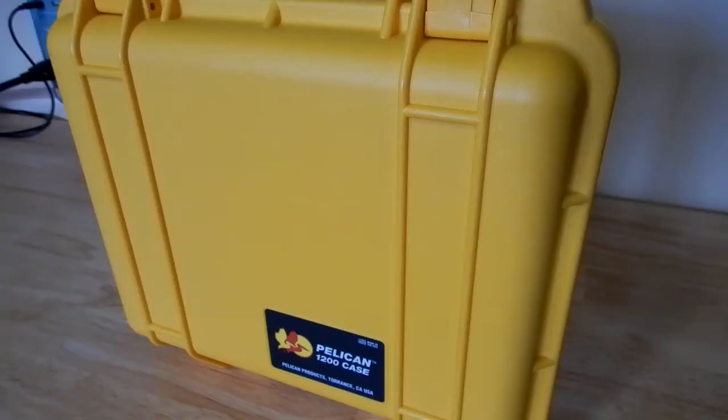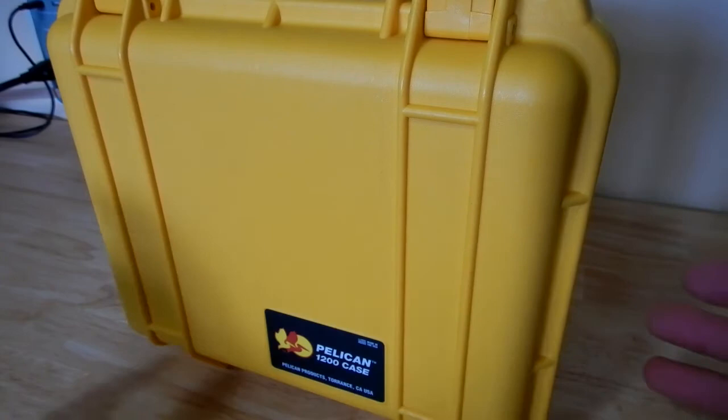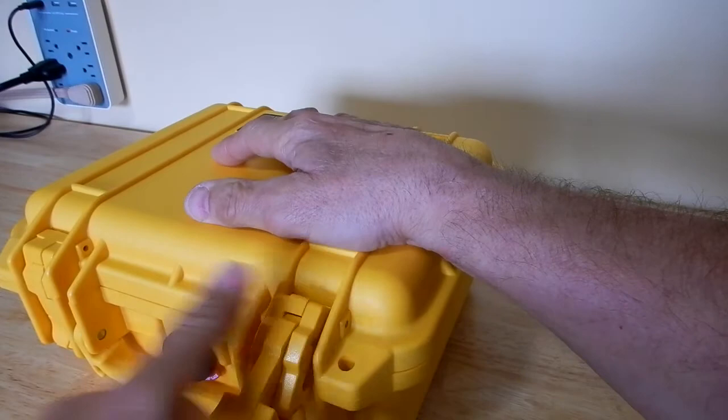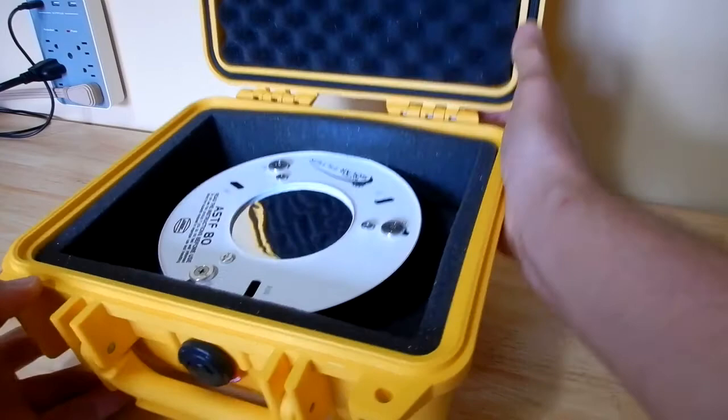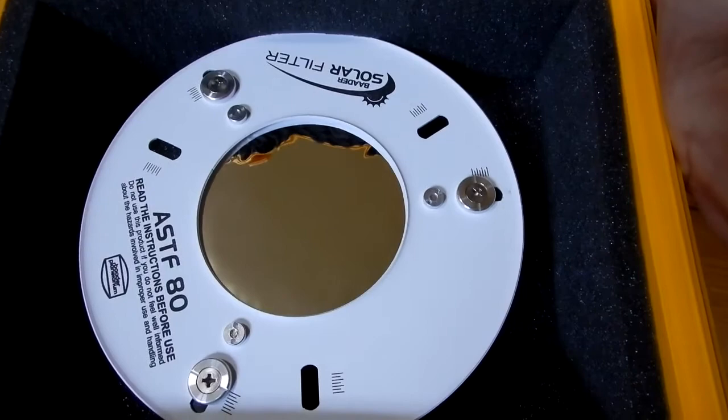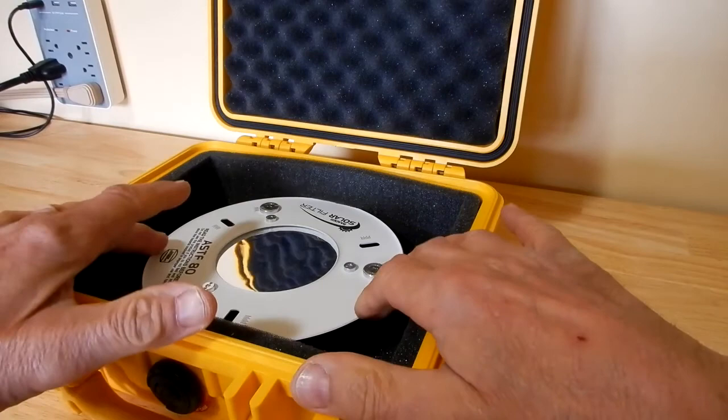One other thing guys, you're going to want to protect that filter from any damage, dust, dirt, moisture. And what I find is the Pelican 1200 case works perfect for that. It fits nicely in there, and being the fact that it's just a little bit bigger, I can squeeze that in there and it stays put right there. And to take it out, just like that. Put it back in here.